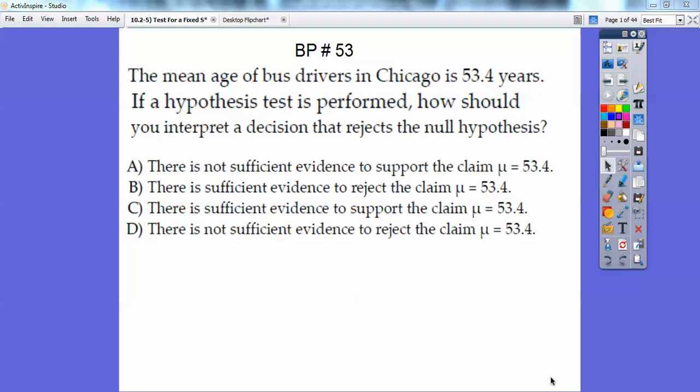Let's do Borg problem 53 first. It's kind of tricky. The mean age of a bus driver in Chicago is 53.4 years. If the hypothesis test is performed, how should you interpret a decision that rejects the null hypothesis?